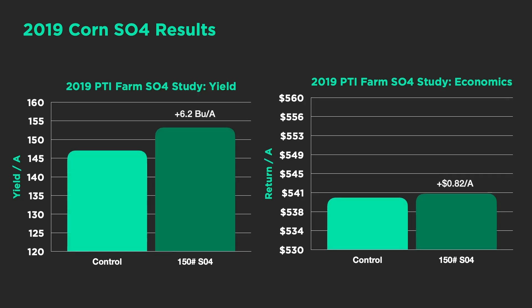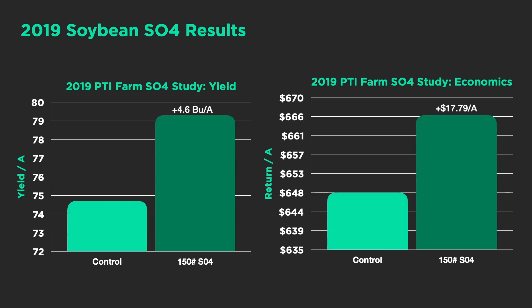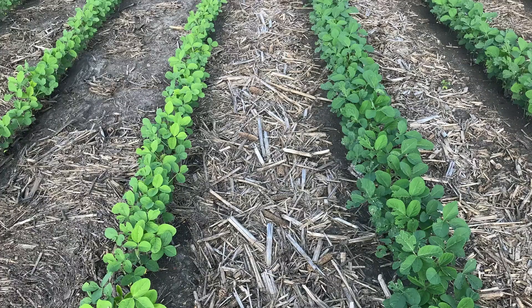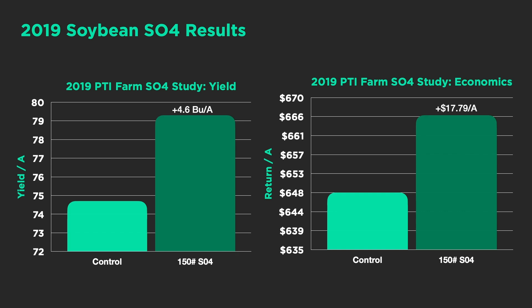Here are our 2019 results with SO4 pelletized gypsum from Calcium Products — the first year we used this product. On corn, we saw a 6.2-bushel yield advantage, leading to just over break-even — just under a dollar per acre net. Soybeans were a different story: a 4.6-bushel yield increase, which led to nearly $18 of net profit per acre. Why was the corn response lower than soybeans? We're not sure yet — this was only our first year of testing.